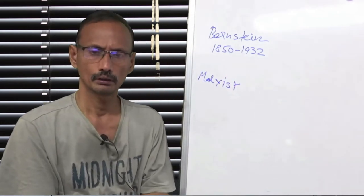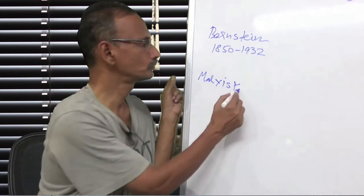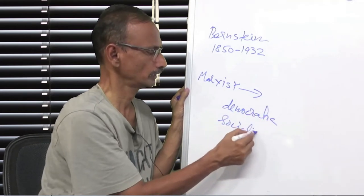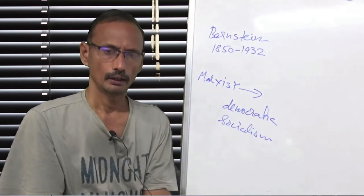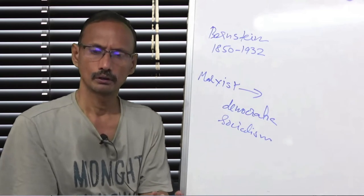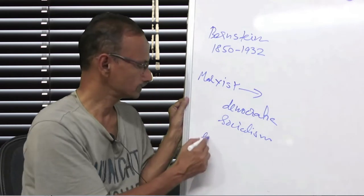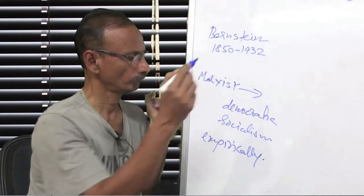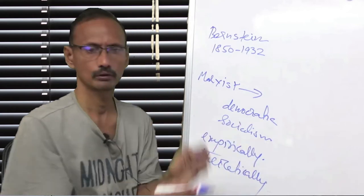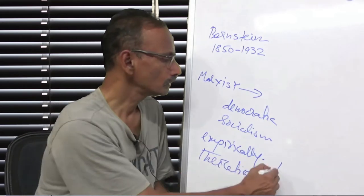Bernstein was a Marxist and later changed to what is called Democratic Socialism. He was one of the earliest who found out what is wrong with Marxism empirically, what is wrong theoretically, and if it is empirically and theoretically wrong, what are the implications.